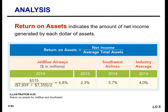One of those analyses is return on assets. Return on assets is an overall measure of profitability. This ratio is computed by dividing net income by average assets. You get average assets by taking assets at the beginning of the year, assets at the end of the year, and dividing them by two. The return on assets ratio indicates the amount of net income generated by each dollar of assets. The higher the return on assets, the more profitable the company.